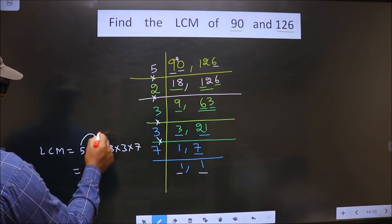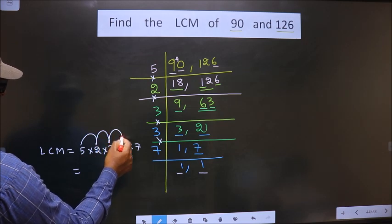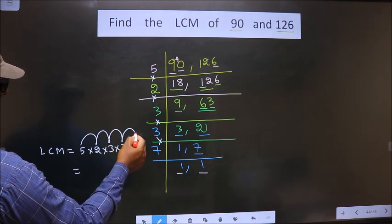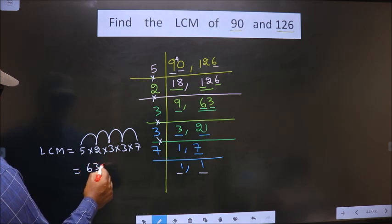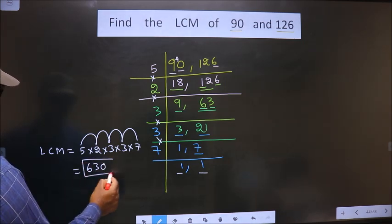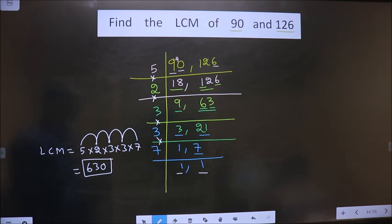5 into 2, 10. 10 into 3, 30. 30 into 3, 90. 90 into 7, 9, 7, 63. So, 0 as it is. So, this is our answer, 630.